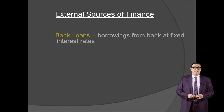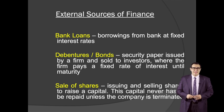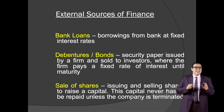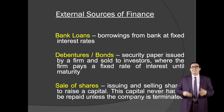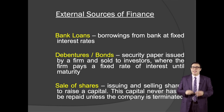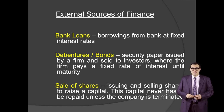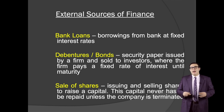Other sources of debt financing include bank loans — borrowing money from a bank at a fixed interest rate, very straightforward. Then we have debentures and bonds: a security paper issued by a firm and sold to investors, where the firm pays a fixed interest rate until it reaches its maturity — basically a certificate guaranteeing the company will pay a certain fixed interest rate until it becomes fully profitable and no longer needs additional investments. And lastly, the sale of shares, which allows you to inject additional money into the company without owing money to somebody.